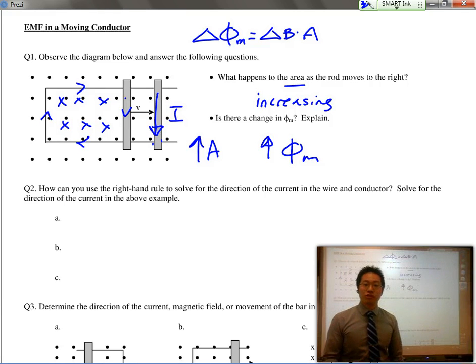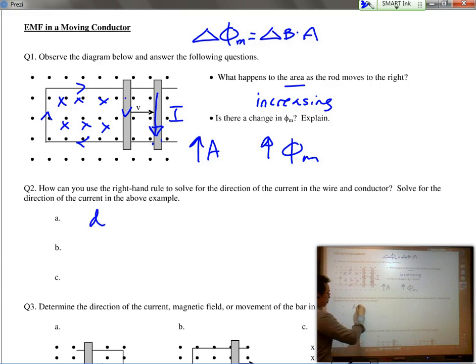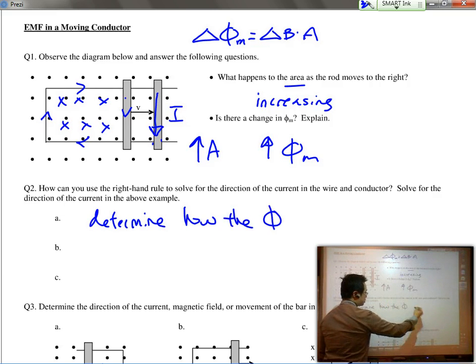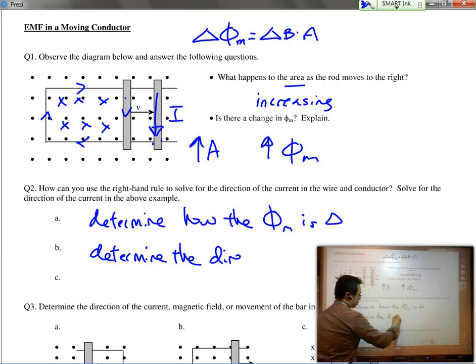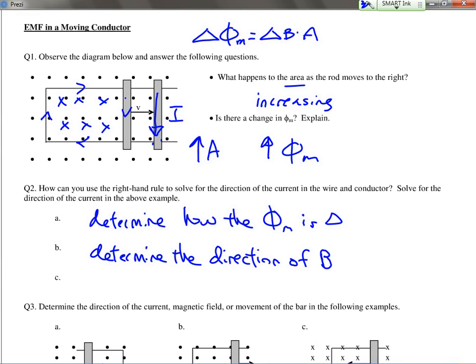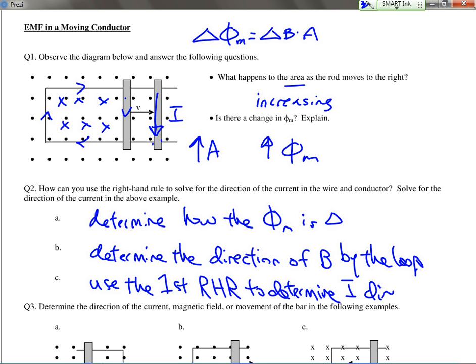So, we're still solving for the direction of the current, just as we had done before, meaning that we have to first determine how the flux is changing. Then we will determine the direction of B by the loop, and then ultimately we use the right-hand rule, the first right-hand rule to determine current direction.